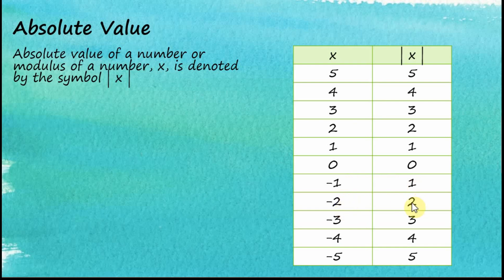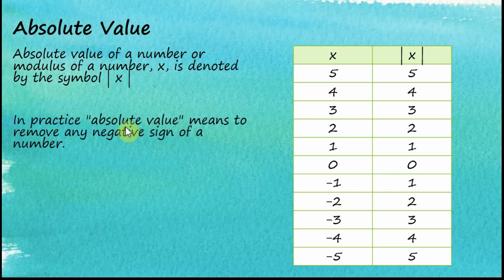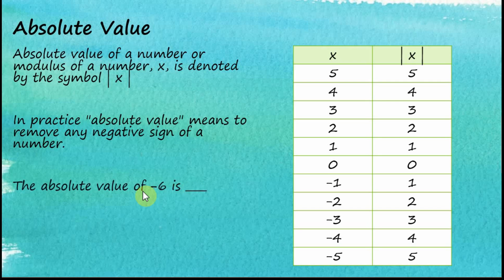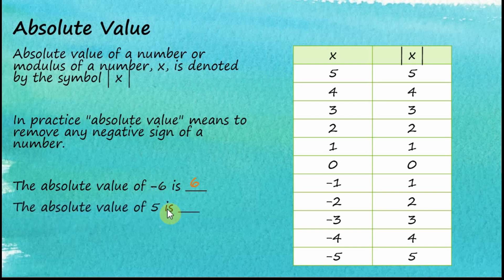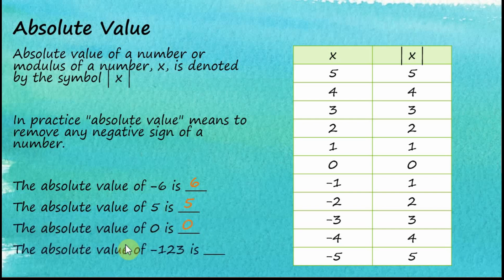However, when the number is negative, for example negative one, the absolute value is one, and negative two gives two. In practice, absolute value means removing the negative sign: negative three becomes three, negative four becomes four. So the absolute value of negative six is six, the absolute value of five is five, zero stays zero, and the absolute value of negative one hundred and twenty-three is one hundred and twenty-three.